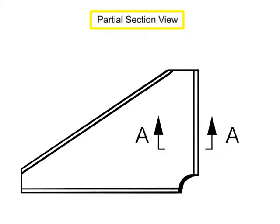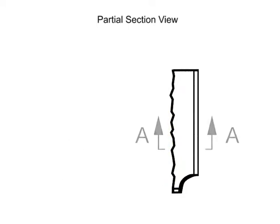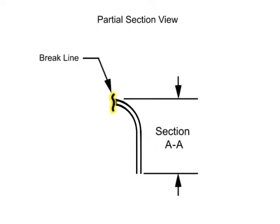A partial section view shows detail of an object without drawing conventional views. The cutting plane line only partially cuts the object, and the section view ends with a short brake line to indicate where the cutting plane ended.